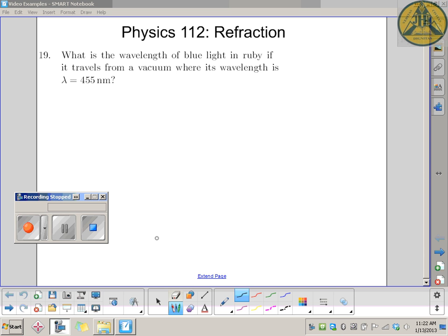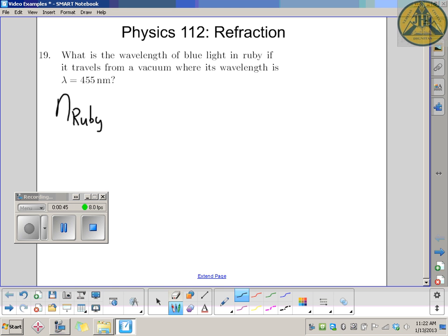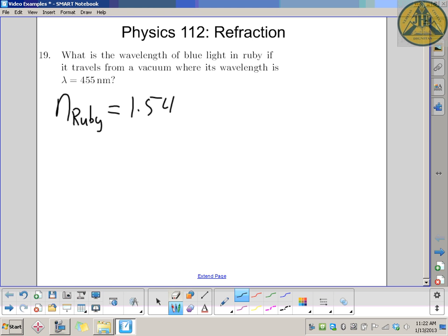The index of refraction we're using for ruby is n_ruby = 1.54. The wavelength of this light in the vacuum of space is 455 nanometers, where nano means times 10 to the negative 9, or a billionth of a meter. We want to know what that wavelength is going to be when it goes into ruby.